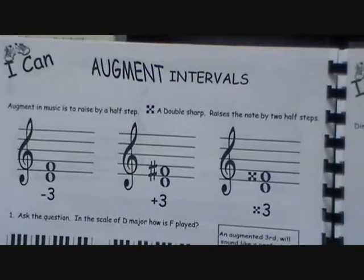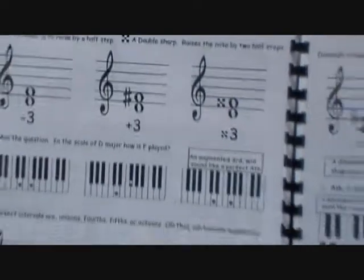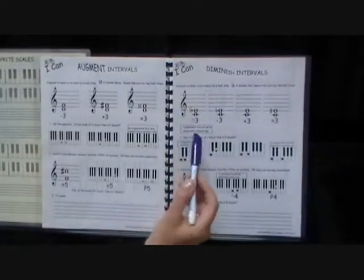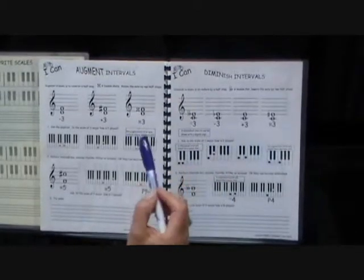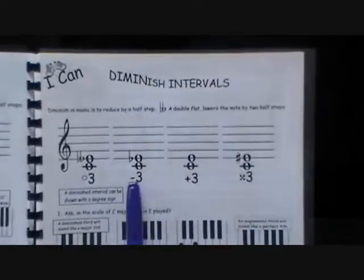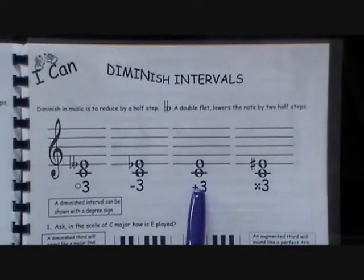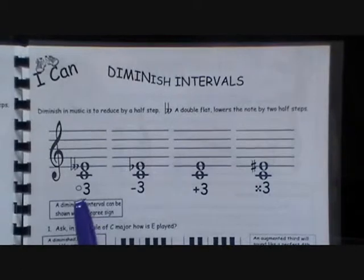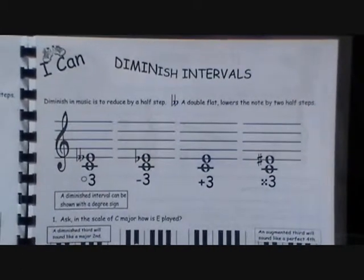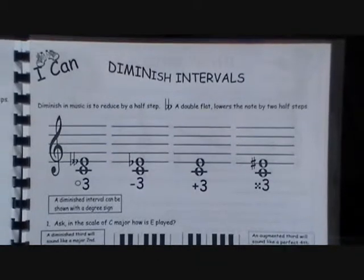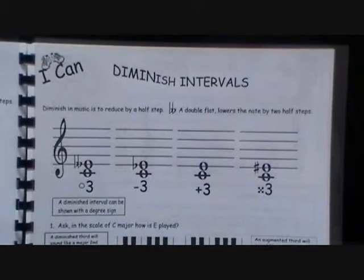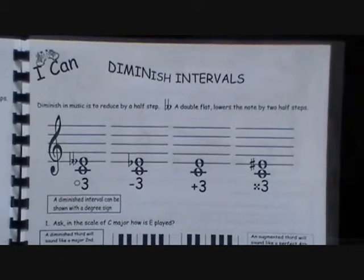Now the other ones, which are your twos, your sixes, your sevens, your threes, they can all move in half steps. They can be diminished, minor, to major, to augmented. So you just have to understand they're always just going to be growing by a half step. A diminished interval can be shown with a degree sign. An augmented interval can be shown with a little x.